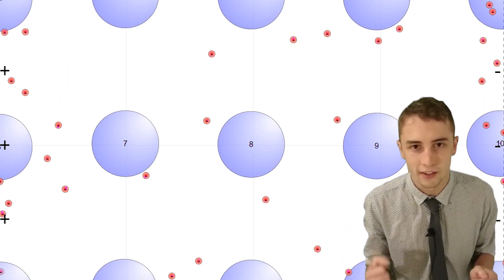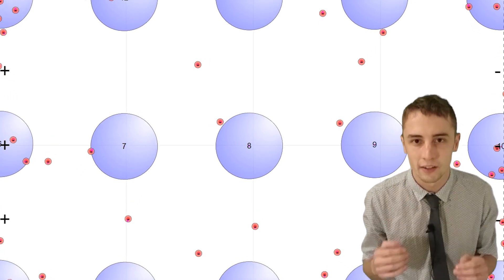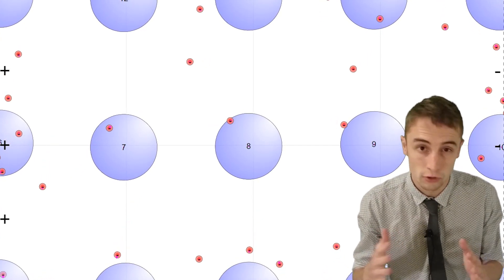These random velocities are going to completely cancel out, so you won't actually end up with any motion at all overall for the electrons.